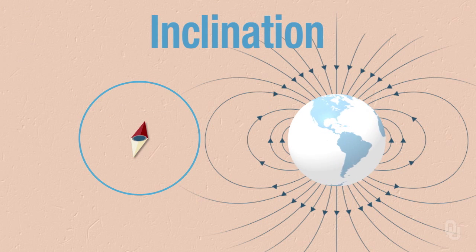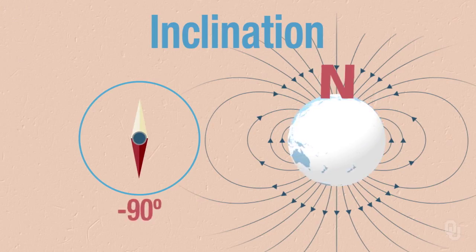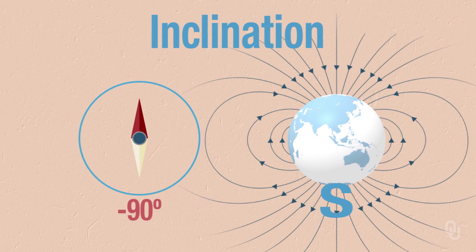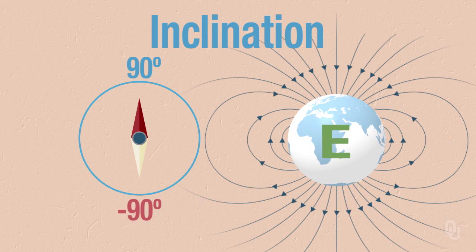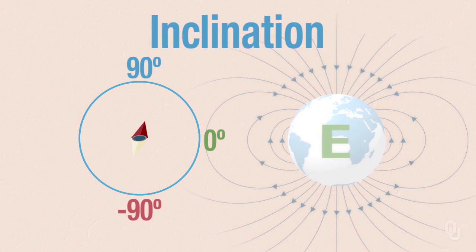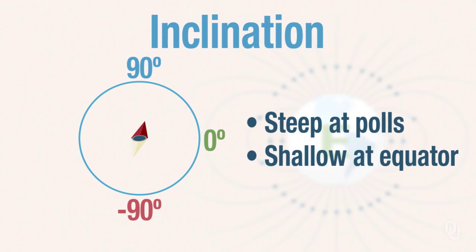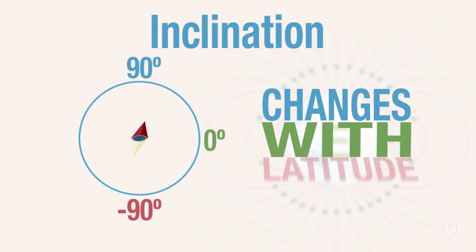It turns out at the north pole, the inclination is very steep down — 90 degrees. At the south pole, it's steep up at 90 degrees. And at the equator, it's zero degrees. So it changes from very steep at the poles to shallow or zero at the equator. This is important because inclination changes with latitude.